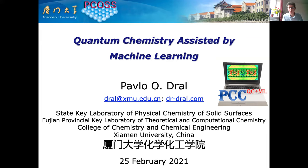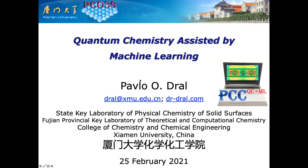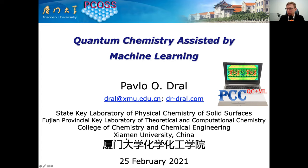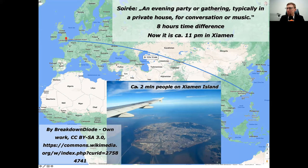Thank you very much for the introduction. I will talk about quantum chemistry assisted by machine learning. First, a brief introduction to Xiamen University: it is located on a small island near the Taiwan Strait, quite far from London — eight hours time difference, so it is currently 11 PM here. By Chinese standards it's a small city of two million people.